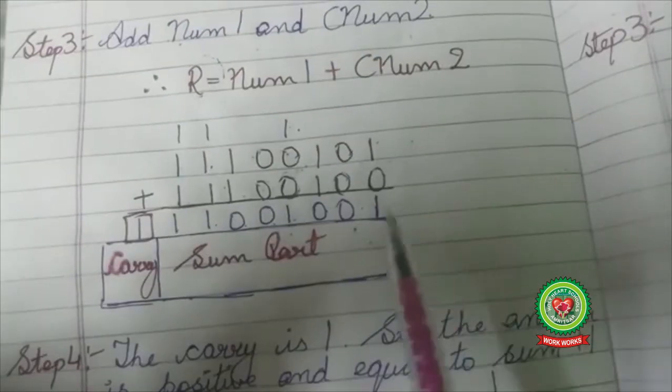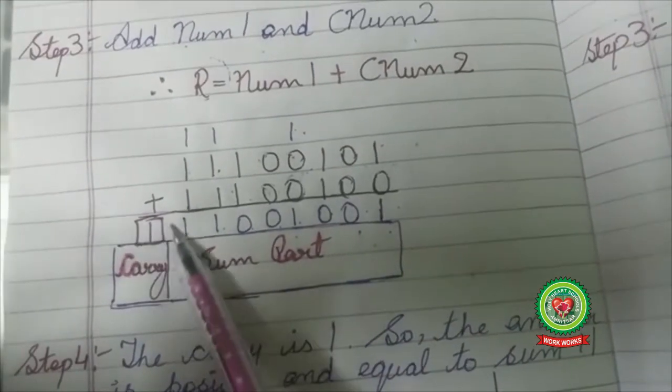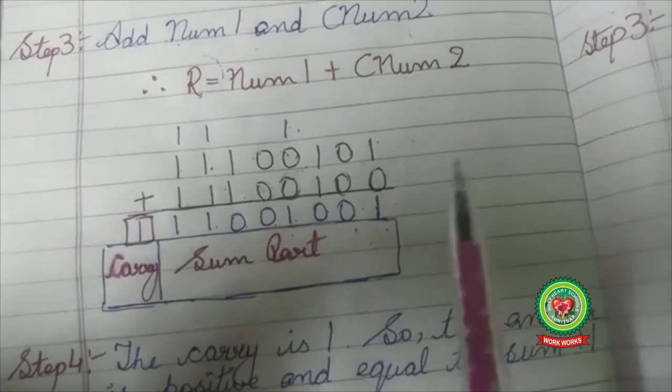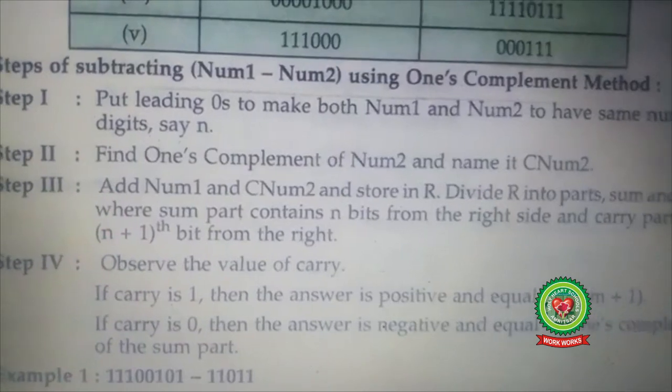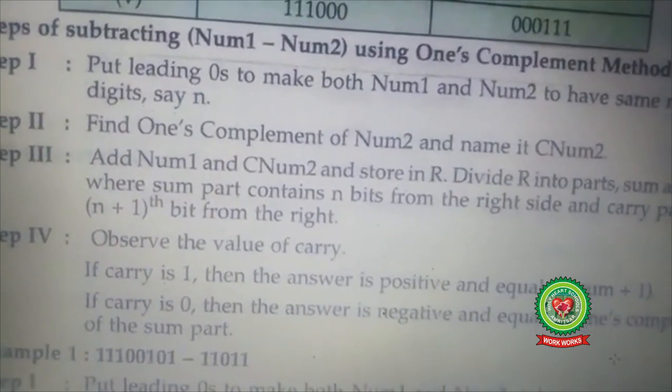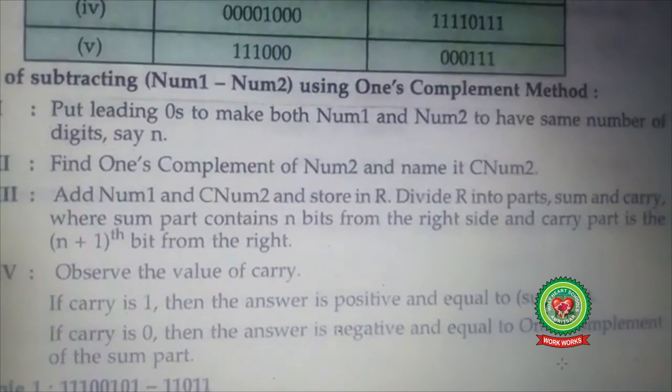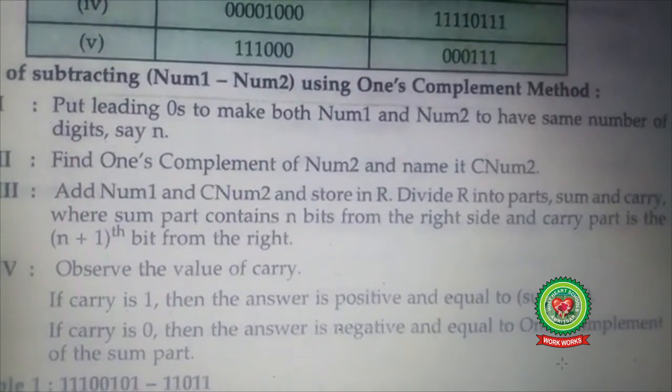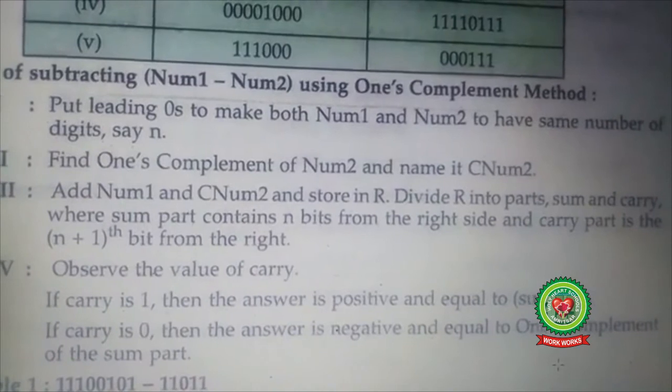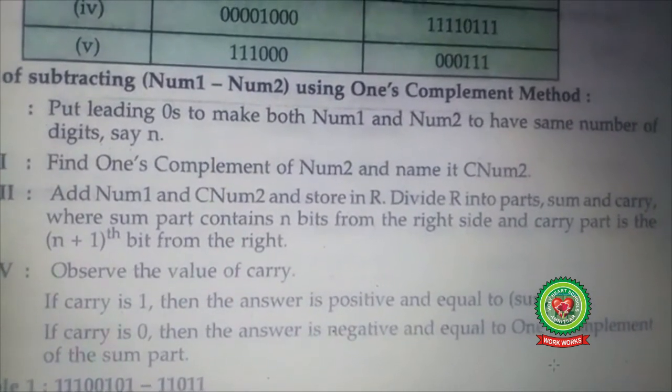Now students, here you are going to observe this carry. Open your book at page number 43. Mark the step 4. Observe the value of carry. If carry is 1 then the answer is positive and we are going to add that 1 into sum.